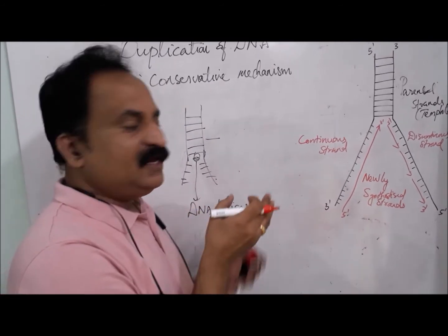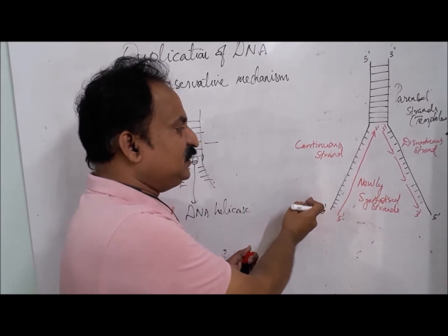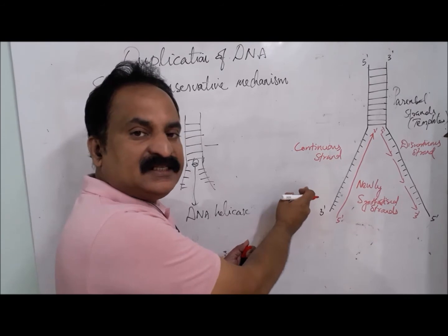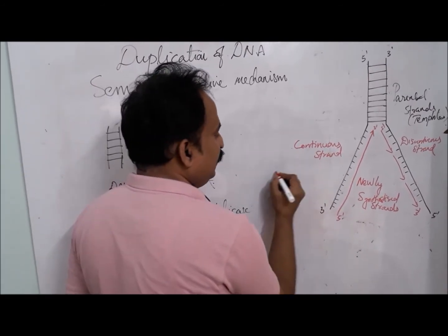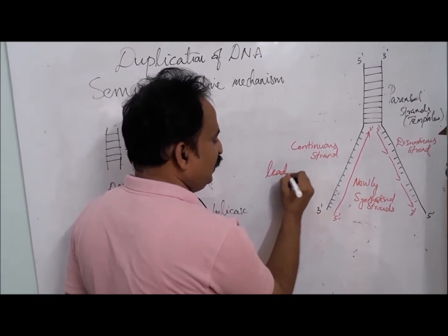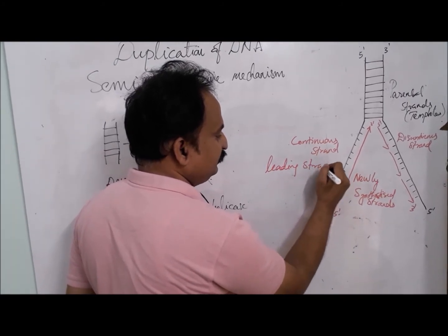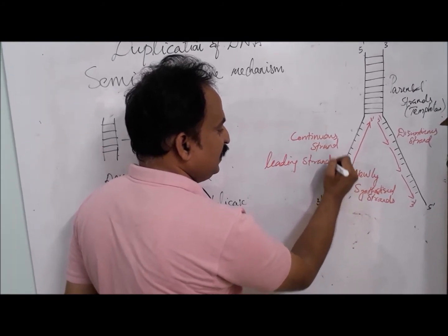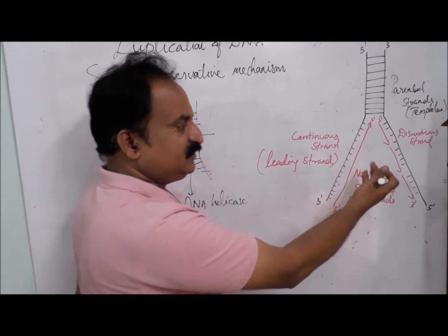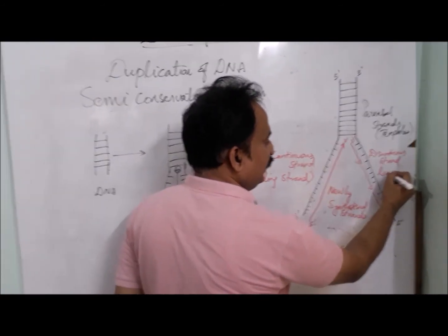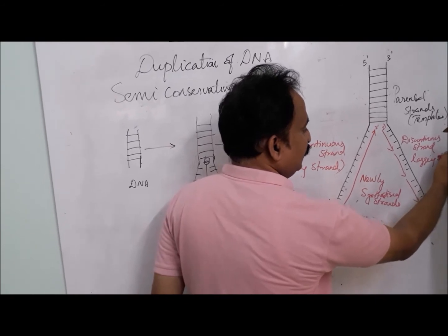In the replication fork, the continuous strand is otherwise called the leading strand, and the discontinuous strand is called the lagging strand.